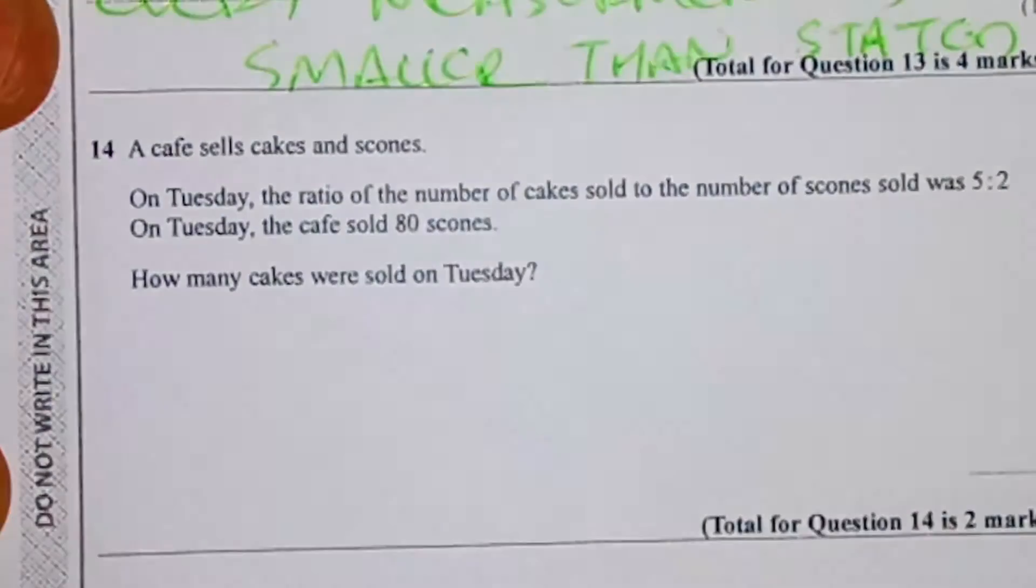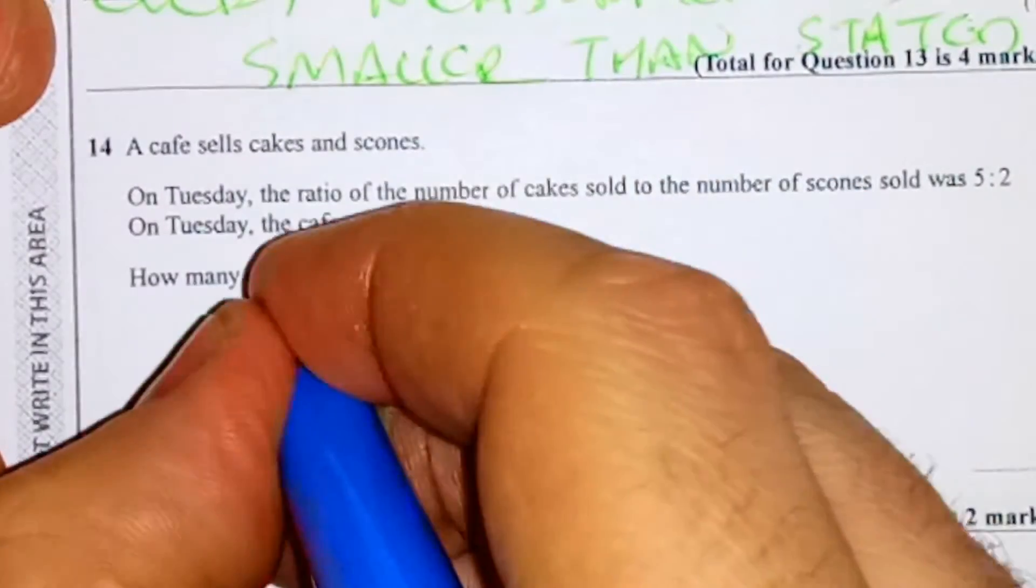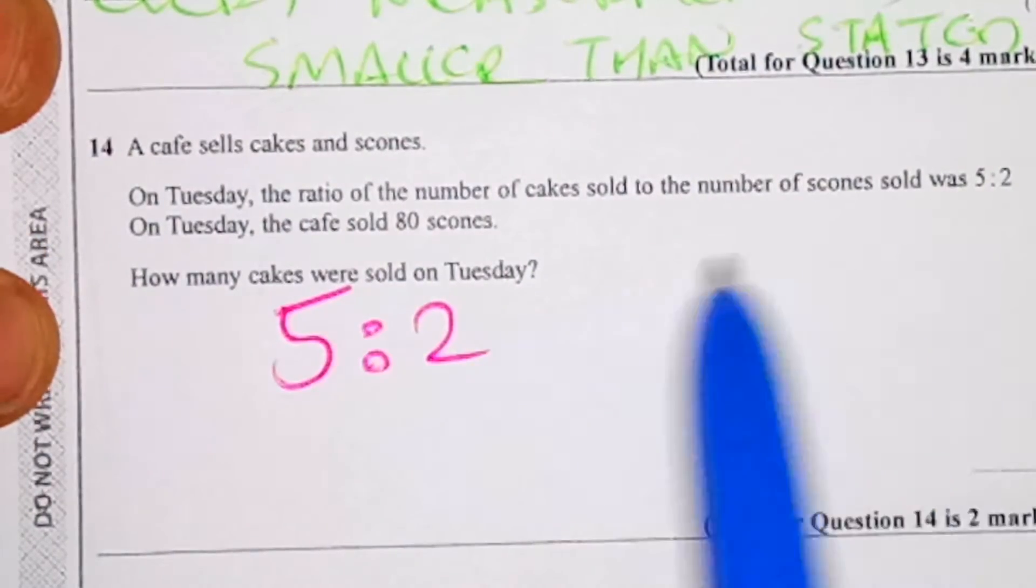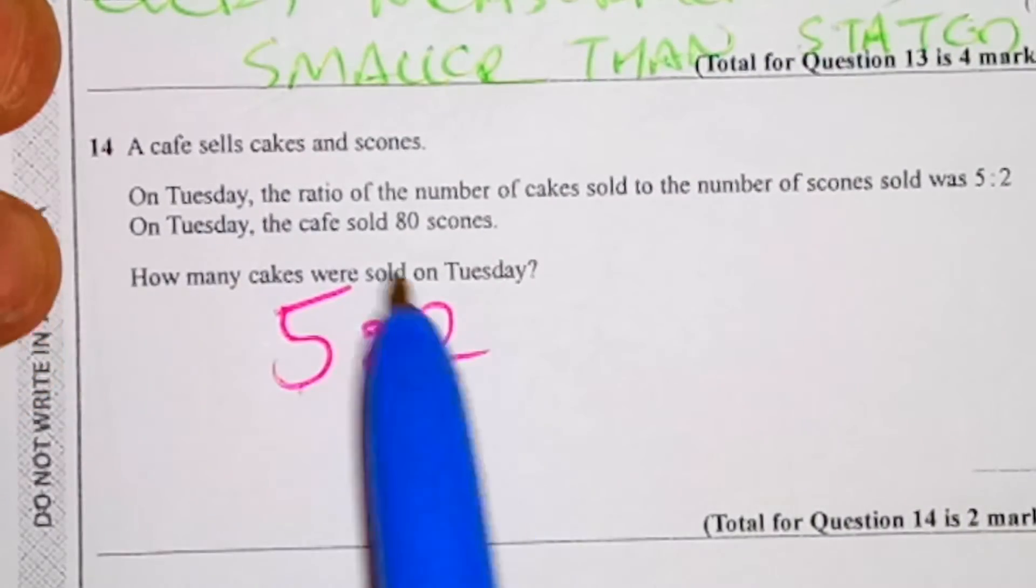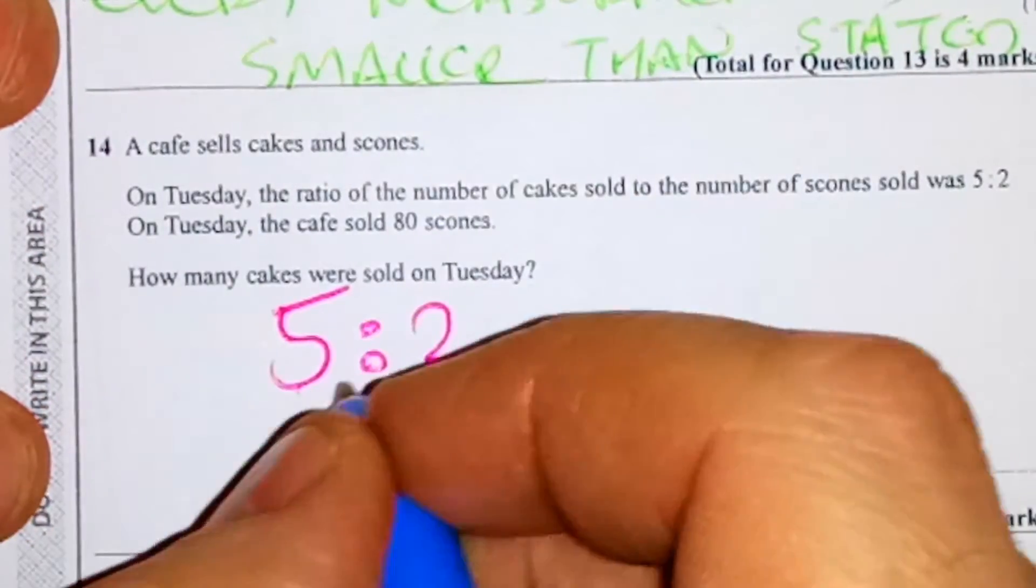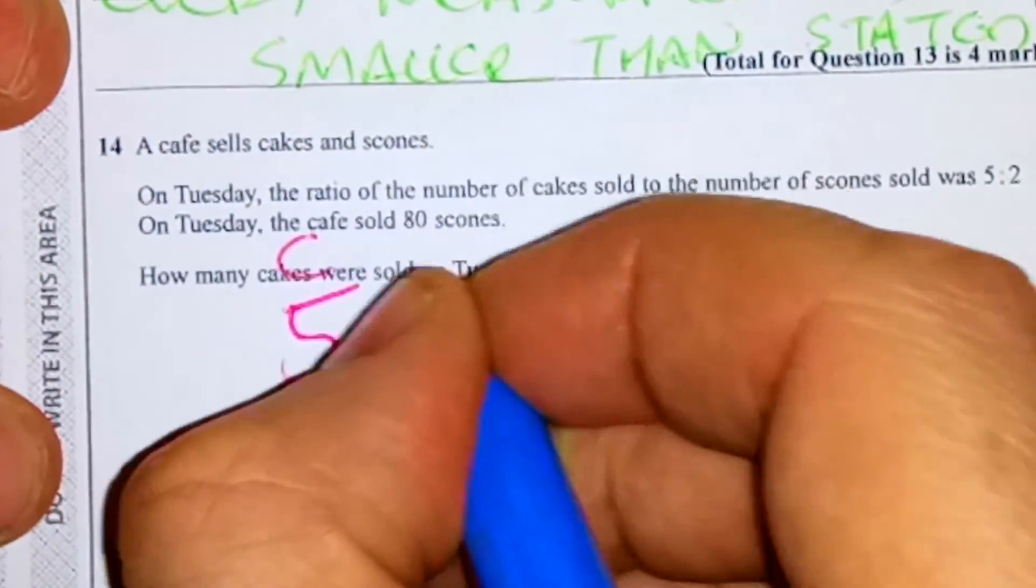So if we think 5 to 2. We need to find out which one is 5, which one is 2. So the ratio of number of cakes sold to number of scones. So 5 is your cakes, 2 is scones.